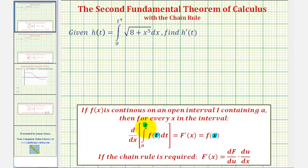So if the upper limit isn't just x — like in our case, where we have t to the fourth — we will have to apply the chain rule to find the derivative of this integral.